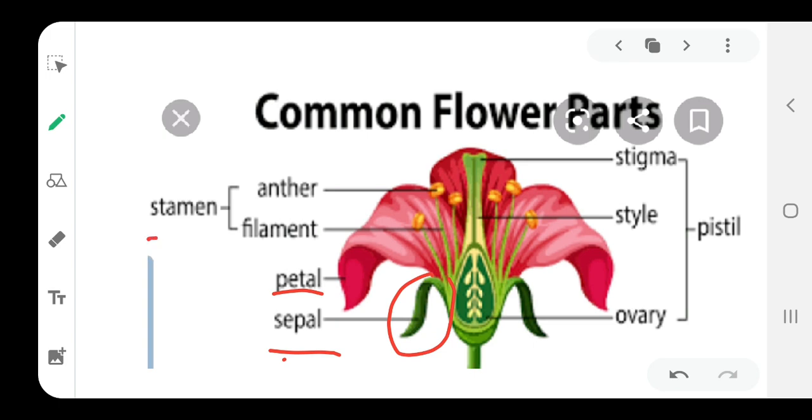Next is stamen. Stamen is the male part of the flower, which includes anther and filaments. In this diagram, there is a green color fibrous part which is known as filament, and the yellow color pollen grain type is known as anther.